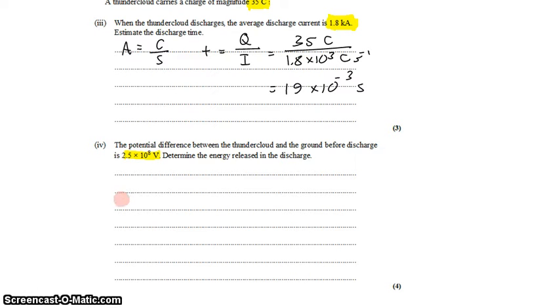To answer this, we recognize that voltage is energy per unit charge. If the cloud is at a potential of 2.5 times 10 to the eighth volts compared to the ground, then charges moving from cloud to ground carry 2.5 times 10 to the eighth joules per coulomb.